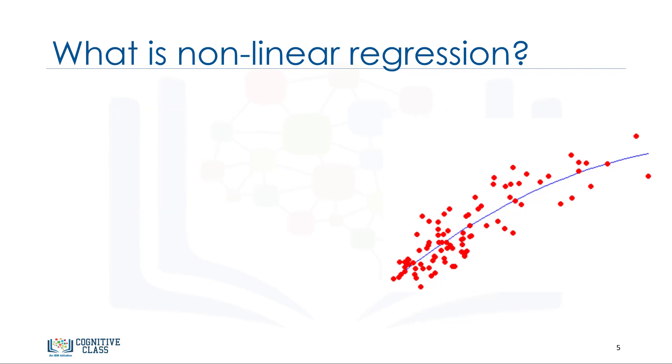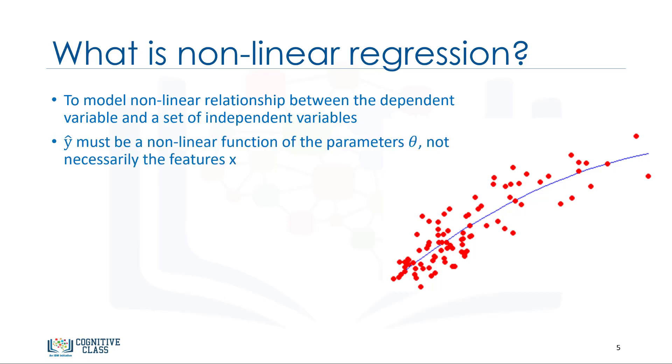So, what is non-linear regression exactly? First, non-linear regression is a method to model a non-linear relationship between the dependent variable and a set of independent variables. Second, for a model to be considered non-linear, y hat must be a non-linear function of the parameters theta, not necessarily the features x.